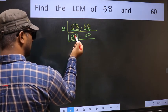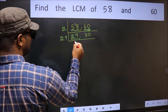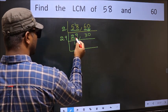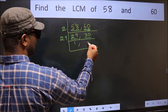Now here we have 29. 29 is a prime number, so 29 once 29. The other number 30 not divisible by 29, so we write it down as it is.